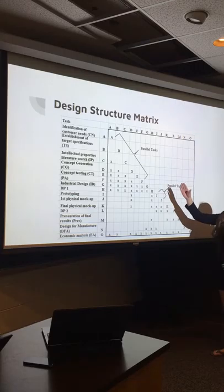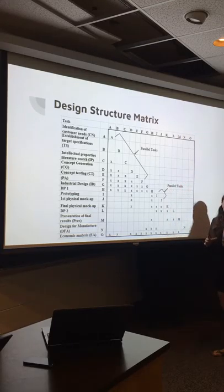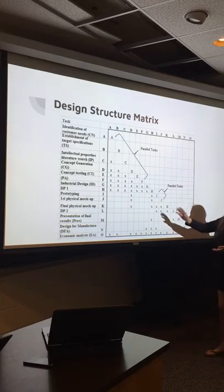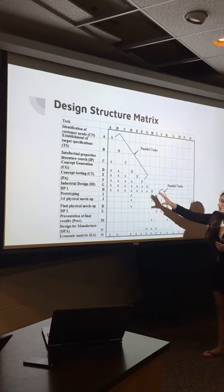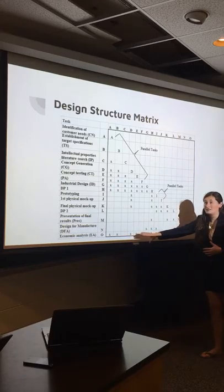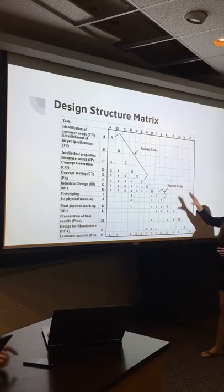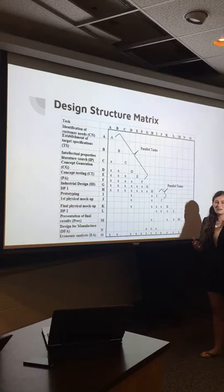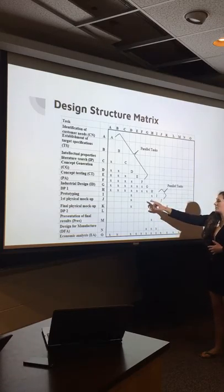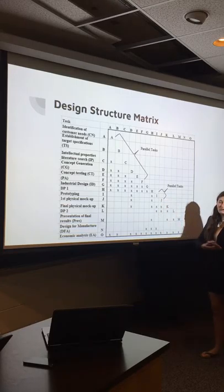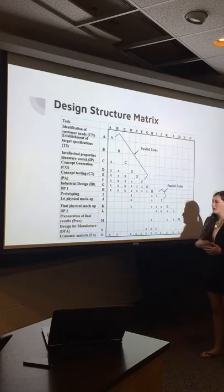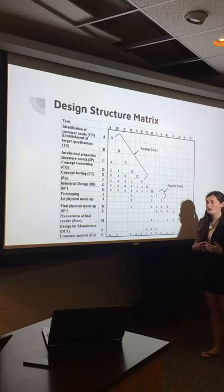For the design structure matrix, it's basically a chart that shows the different relations between the different tasks in our Gantt chart. The relations are shown by the X's marked in the chart. As you can see, the economic analysis is related to most every single task, because our team always wants to consider economic factors with whatever we do. Also, our prototyping and first physical mockup is an example of two tasks that we put in parallel, because they were so closely related that we could do them simultaneously.